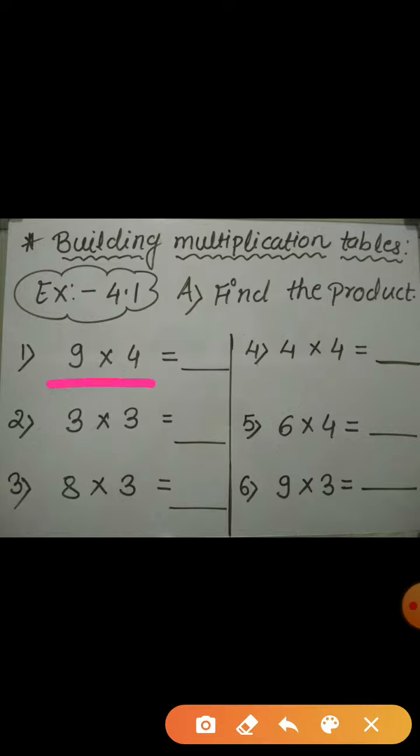9 ones are 9, 9 twos are 18, 9 threes are 27, 9 fours are 36. So, the answer is 36. Hence, the product of 9 and 4 is 36.